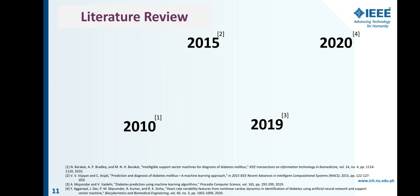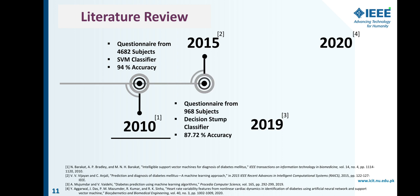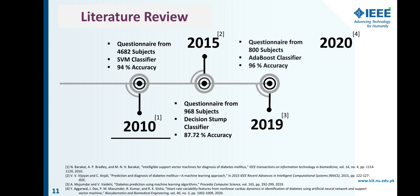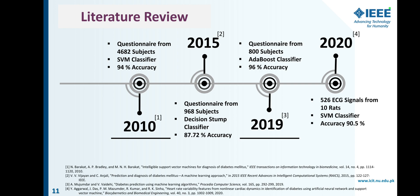Moving toward the literature review: a 2010 paper gathered data via questionnaire from 4,682 subjects using an SVM classifier achieving 94% accuracy. A 2015 research used questionnaire data from 968 subjects with a CNN classifier achieving 87.72% accuracy. A 2019 work used questionnaire data from 800 subjects with an AdaBoost classifier achieving 96% accuracy. Finally, a 2020 paper used ECG signal data from 526 signals gathered from 10 subjects, using an SVM classifier to achieve 90.5% accuracy.